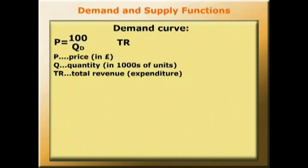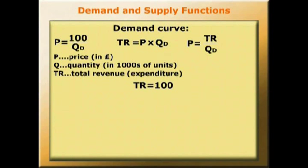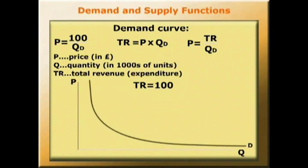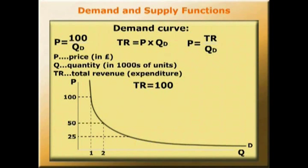Total revenue TR equals p times qd, and p equals TR over qd. In our example, TR equals 100. Diagrammatically, this demand curve looks like this: if price is 100, quantity demanded is 1; if price equals 50, quantity demanded is 2; if price equals 25, quantity demanded is 4, and so on. Whatever the price-quantity combination, total revenue always stays the same.